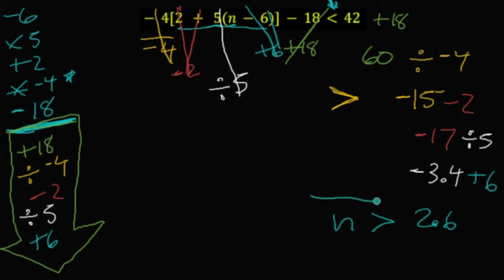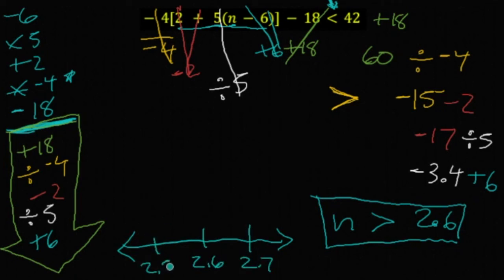n is strictly bigger than 2.6, so it's not allowed to equal 2.6, open circle. It's allowed to be bigger than 2.6, shade above. Multi-step inequalities.